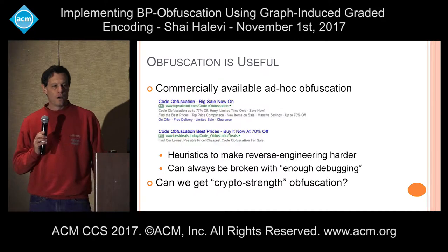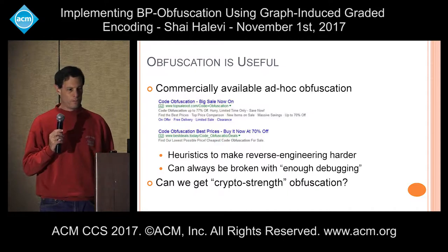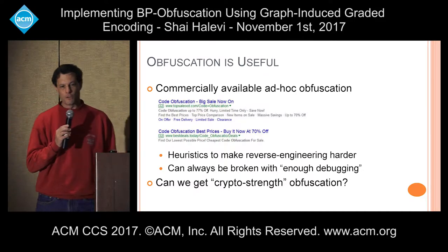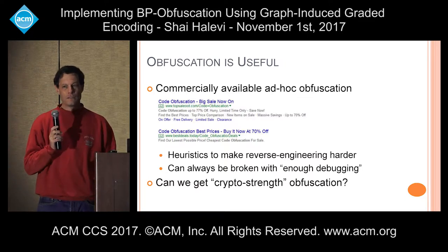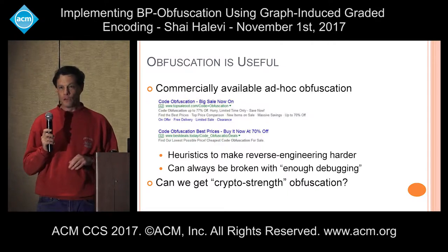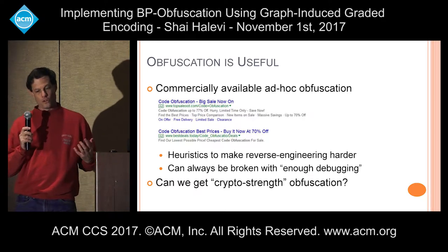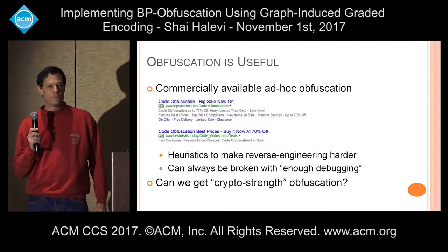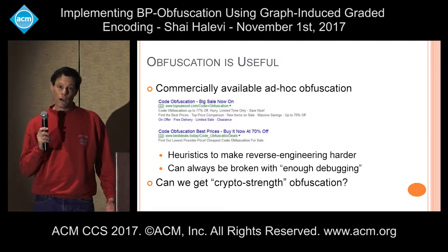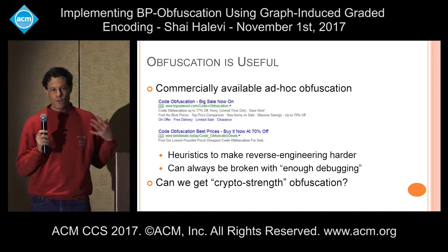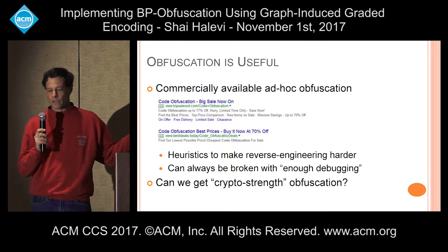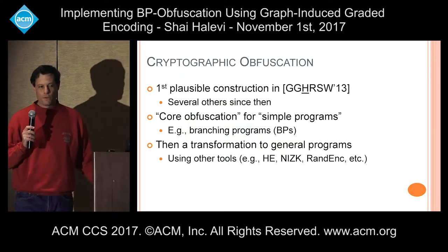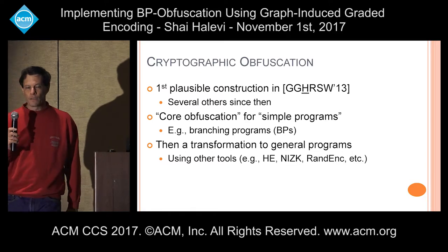In previous talks we heard all kinds of examples. I just did a quick Google search — you can get an obfuscator for up to 77% off apparently. Commercial obfuscators are absolutely available and actually very useful, but what they have is kind of heuristic — they try to make debugging and reverse engineering harder. It's commonly accepted that if you take any of them and have enough manpower and debugging power, you will be able to break them. This brings up the question: can we get something as strong to break as, say, breaking RSA? Can we get crypto-strength obfuscation?